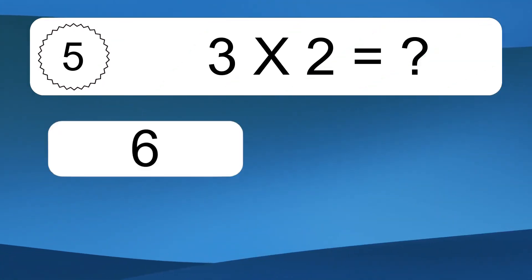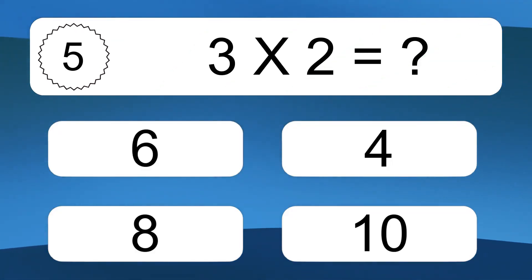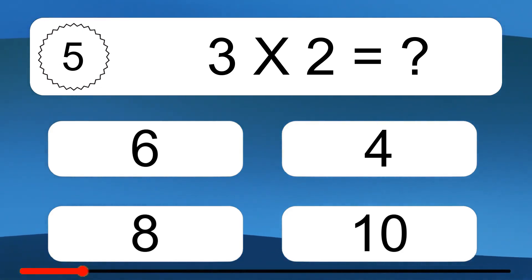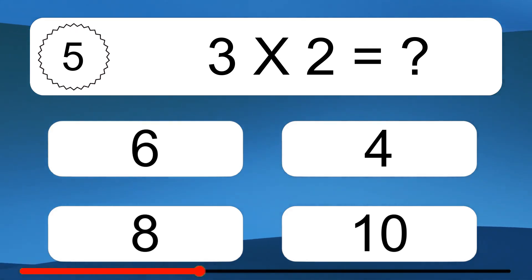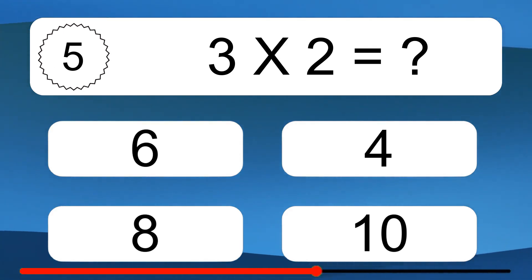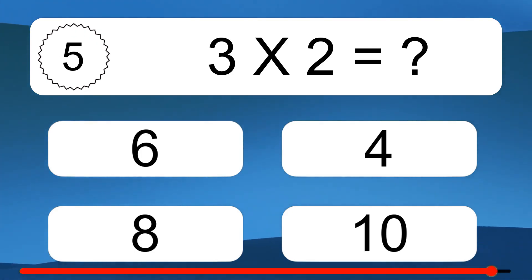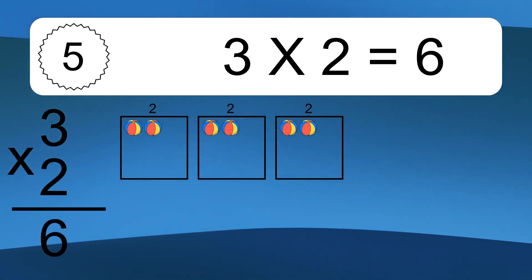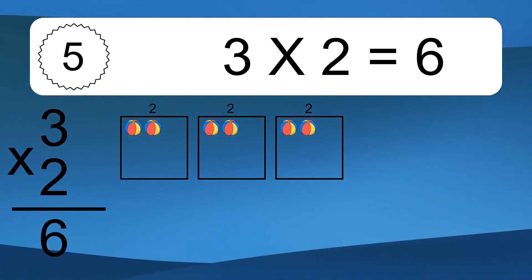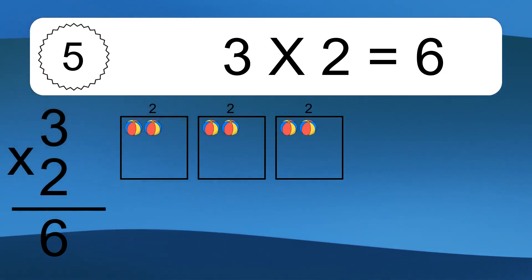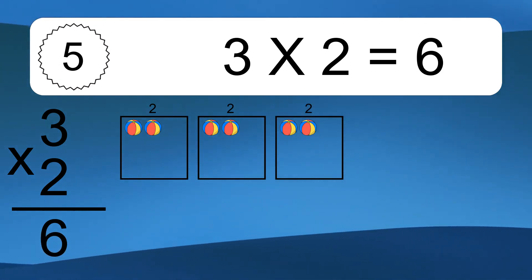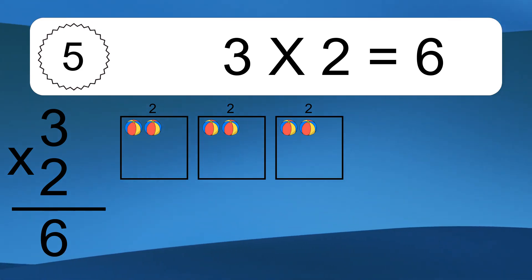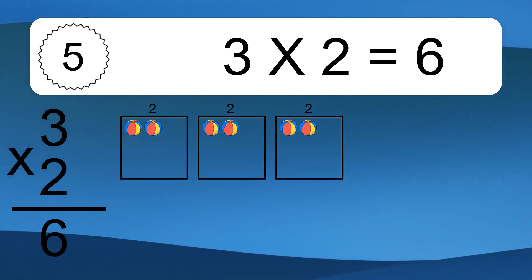3 times 2 equals what? 3 times 2 equals 6. We have 3 boxes, and each box has 2 colorful balls inside. If you count all the balls in all the boxes together, you will have 3 times 2 balls. This equals 6 balls.